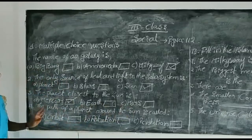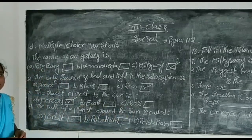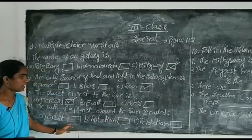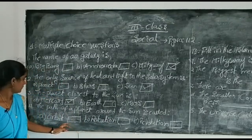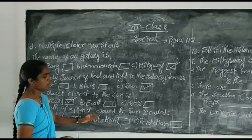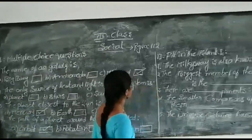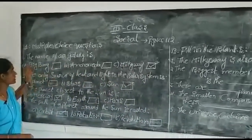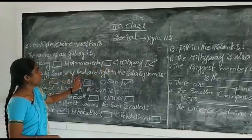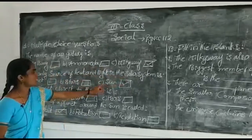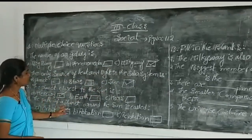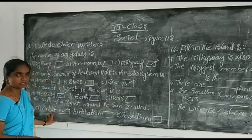The path of a planet around the sun is called what? Orbit or rotation? Orbit is correct. So to recap: the name of our galaxy is Milky Way, the only source of heat and light in the solar system is the sun, the planet closest to the sun is Mercury, and the path of a planet around the sun is called orbit.